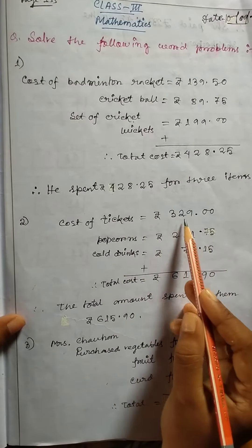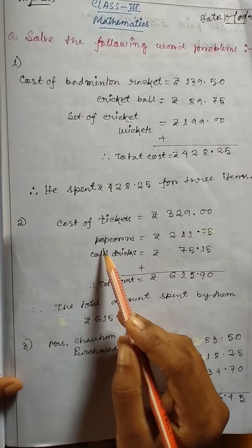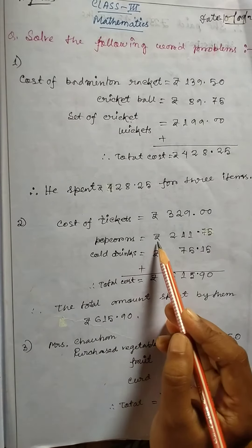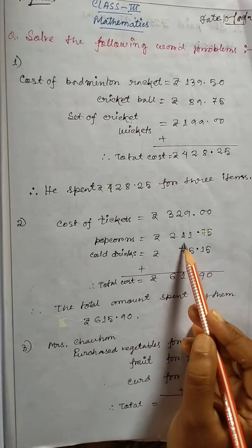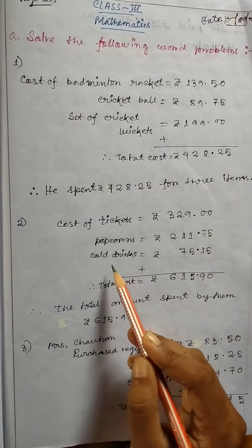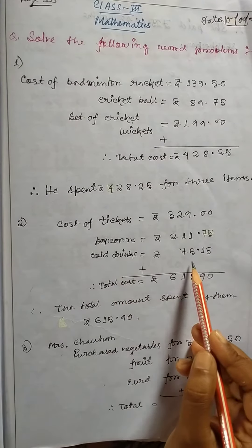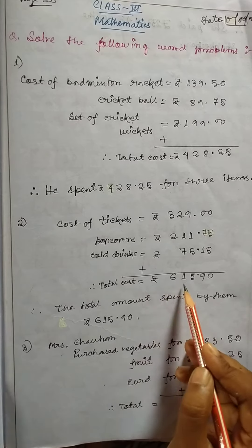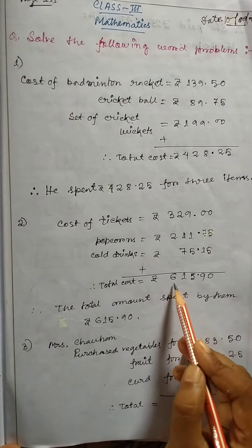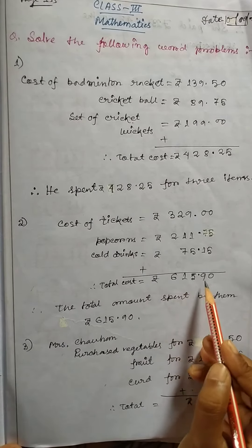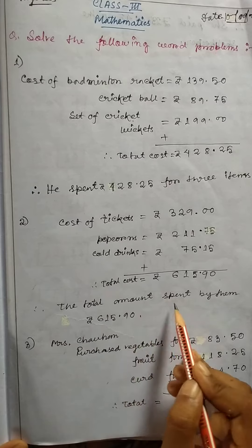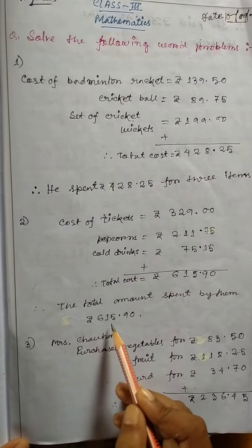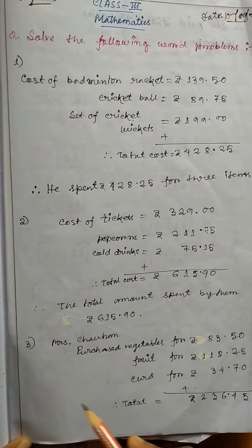Question number two. Cost of tickets equals rupee 329. Popcorns equals rupee 211.75. Cold drinks equals rupee 75.15. So total cost equals rupee 615.90. The total amount spent by them is rupee 615.90.